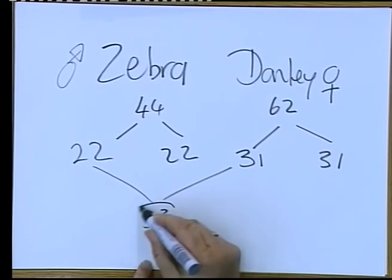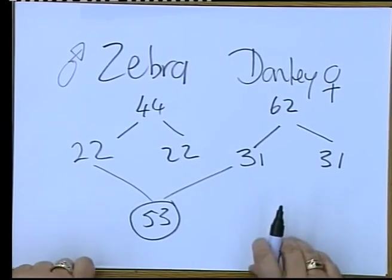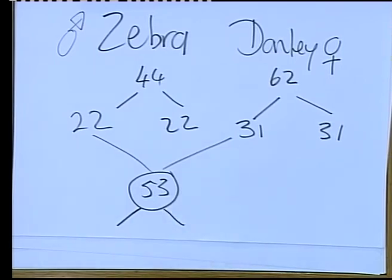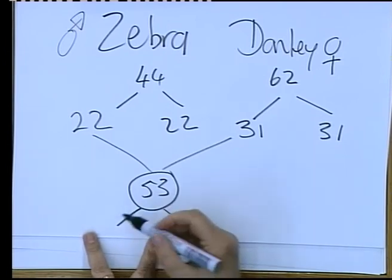If the zebrdonkey offspring wants to reproduce, how would gametes form? We don't have an even number — would it be 26 and 27? It won't work. Homologous pairs can't form, crossing over can't occur, and certain chromosomes lack the proper number of genes. That is why you will not have fertile offspring. This is an example of hybrid sterility — other examples include mules, zebrdonkeys, and the liger, a cross between a lion and a tiger.